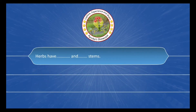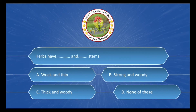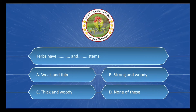Herbs have ___ and ___ stems. The options are: A. Weak and thin, B. Strong and woody, C. Thick and woody, D. None of these. The correct answer is Option A: Weak and thin.